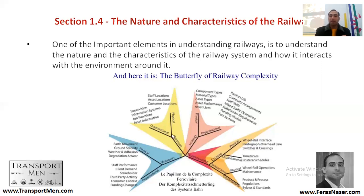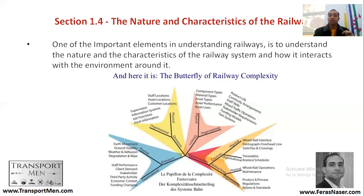The second aspect of complexity is dispersion. The railway is dispersed across an entire country, so there is physical dispersion — staff locations and asset locations are spread everywhere. This raises the question of how we can effectively control such a system. There is also organizational dispersion, where supervision and asset information systems can be in different places.